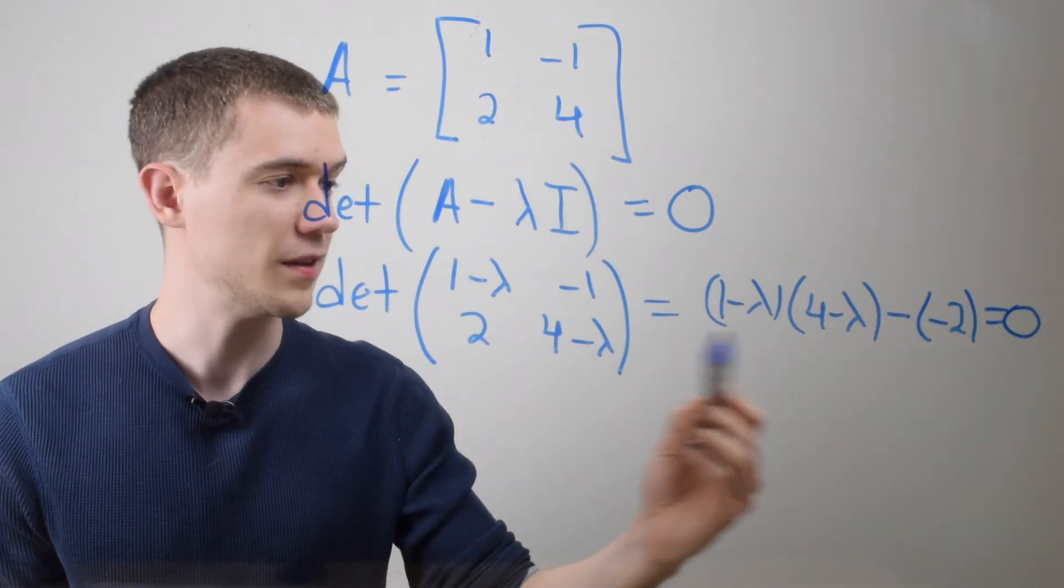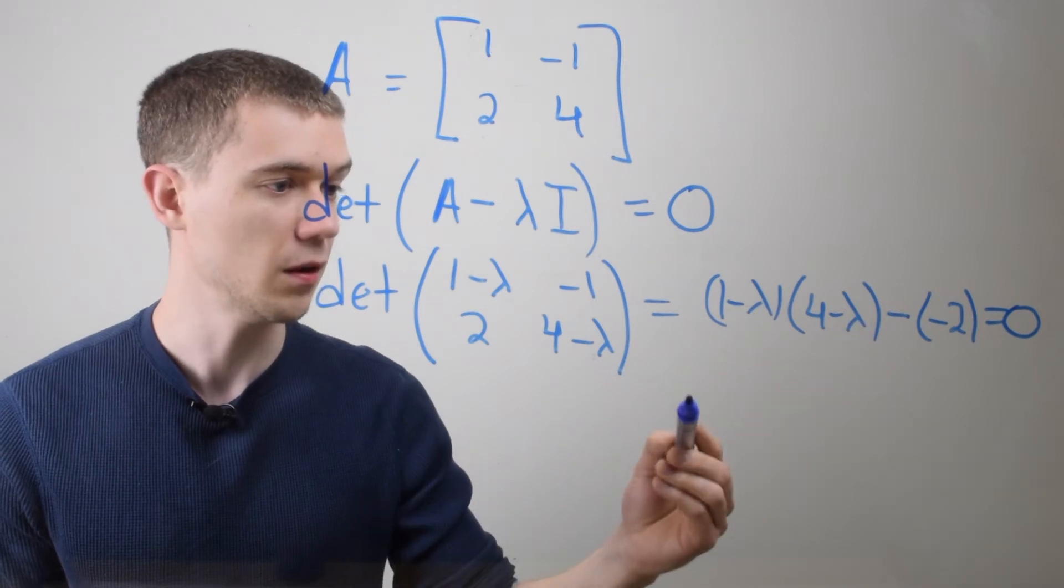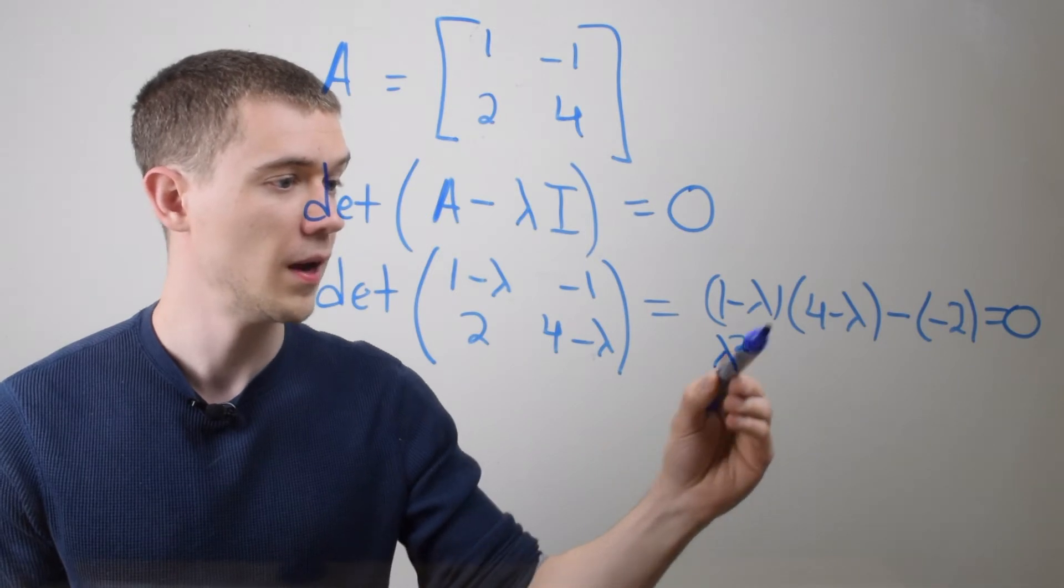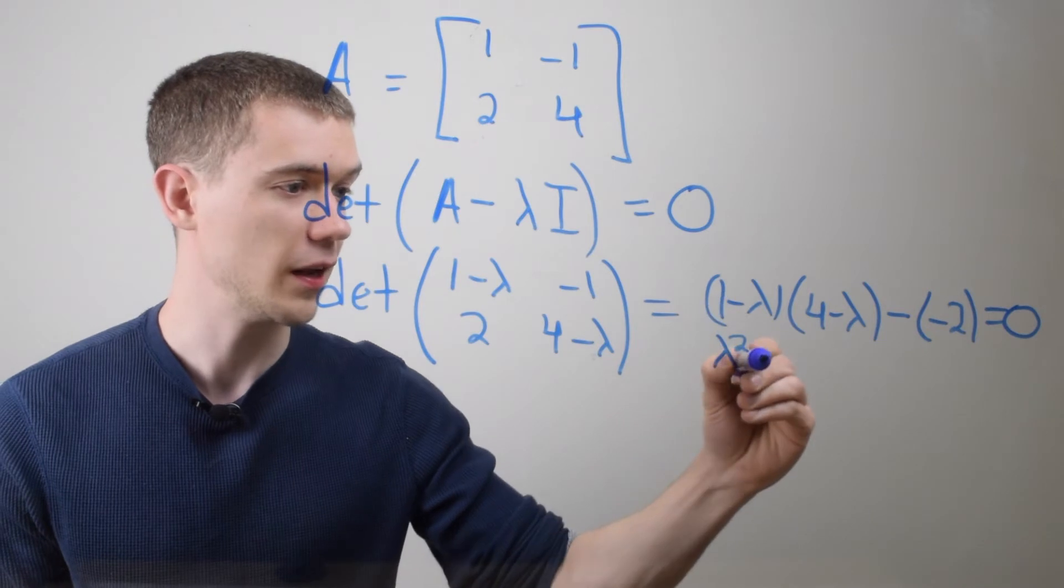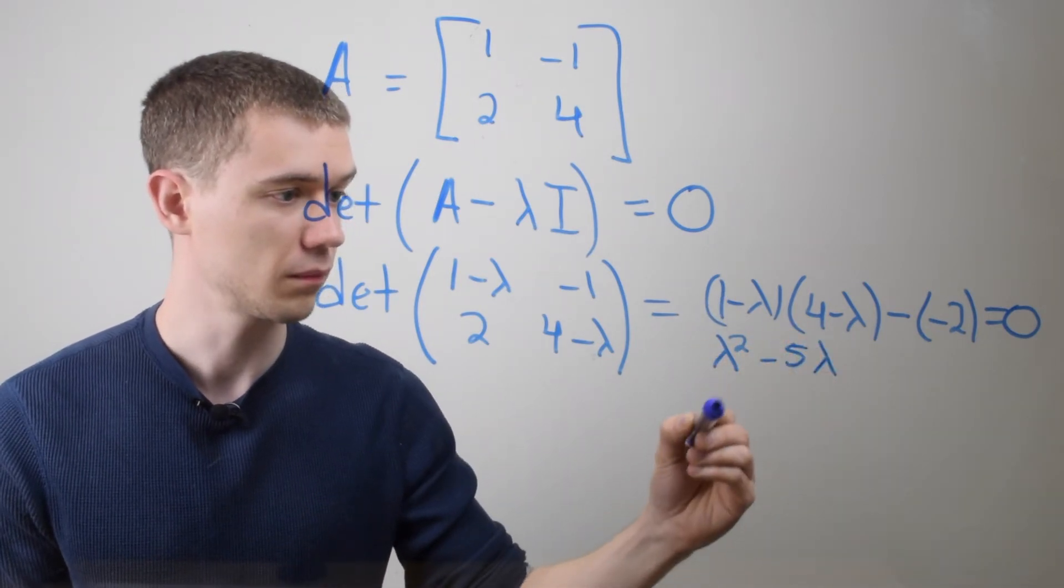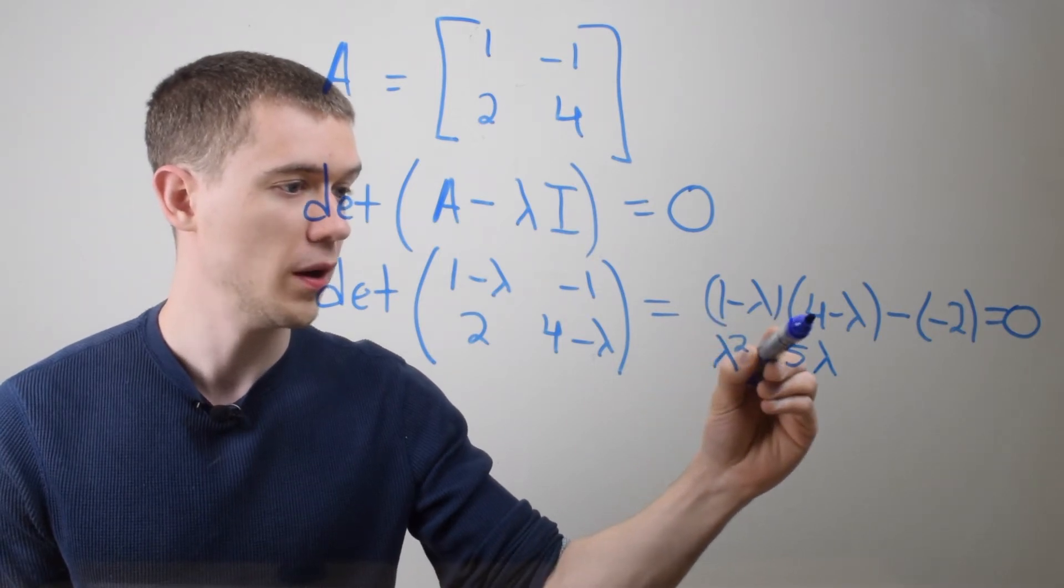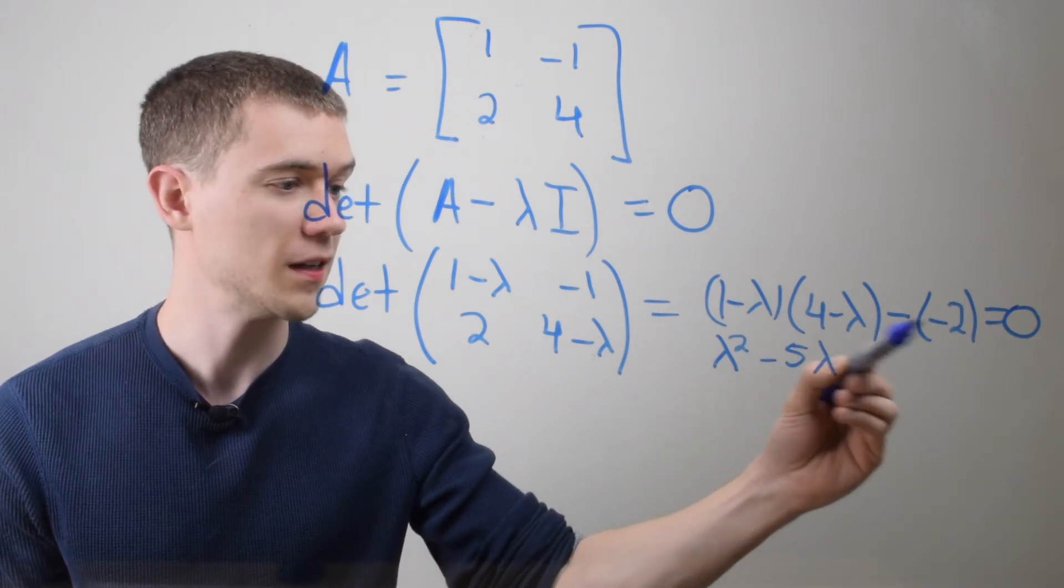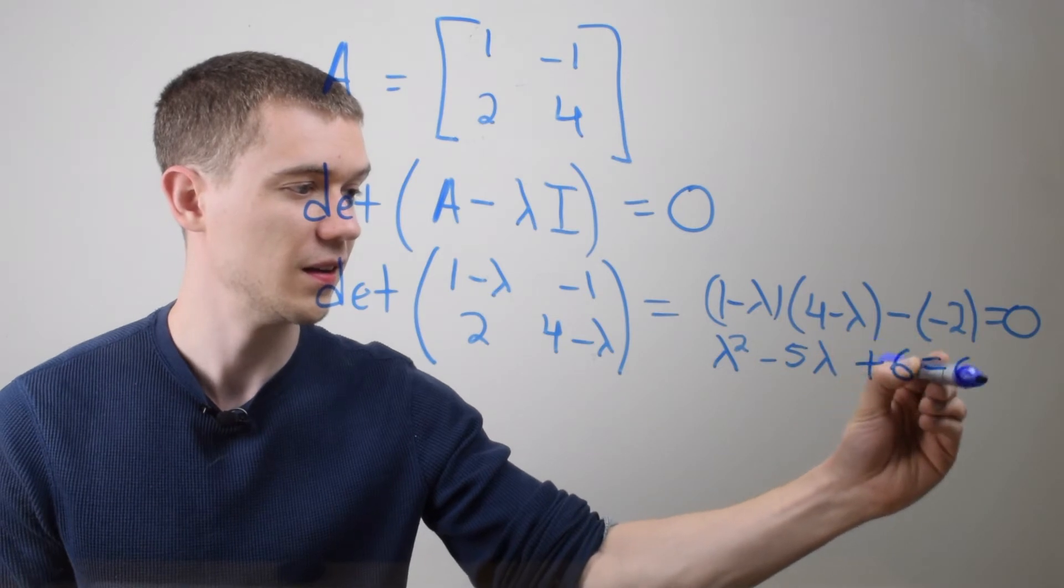Now if I simplify this out, if I FOIL this, I'm gonna get lambda times lambda, both negative, it's gonna be λ². I'm going to have -4λ - another λ, that's gonna be -5 times λ. And then I'm going to have 1 times 4 is 4 minus -2. 4 plus 2 is 6 equals 0.